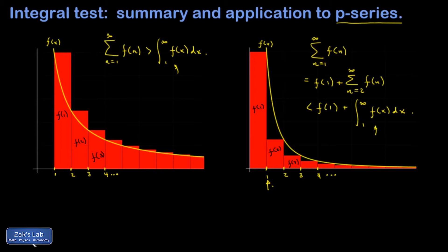So to summarize the integral test for convergence, if the integral from 1 to infinity of f of x dx diverges, it automatically means that our series diverges. A nice compact way of saying this is that this integral and this series are either going to both converge or both diverge.